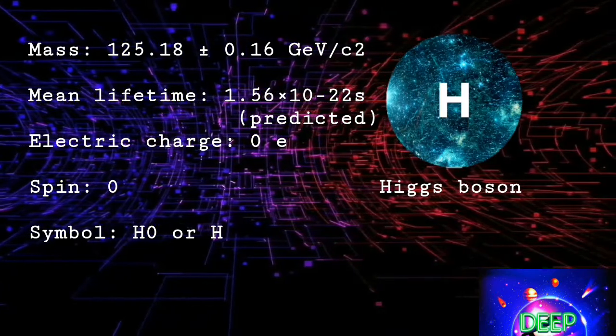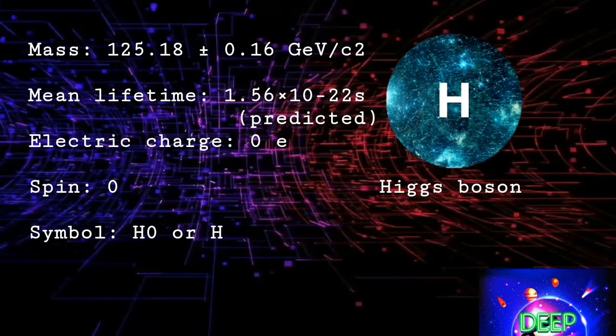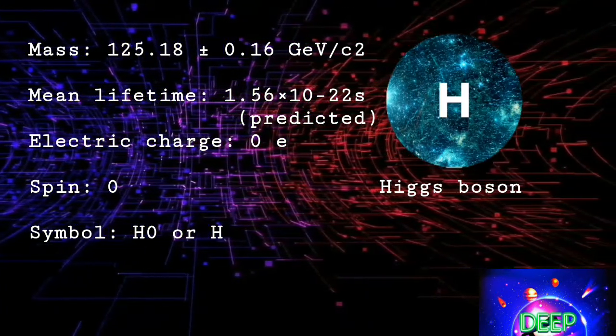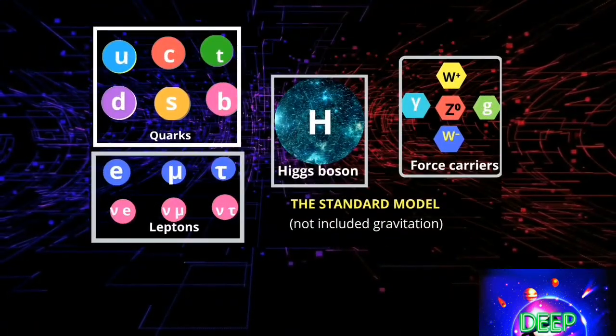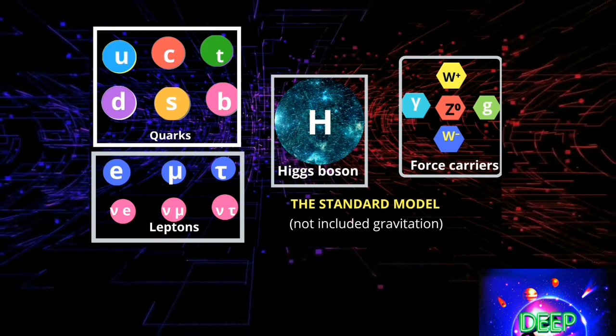In the standard model, the Higgs boson is unique. It has zero spin, no electric charge, and no strong force interaction. The spin and parity were measured through angular correlations between the particles it decayed to.